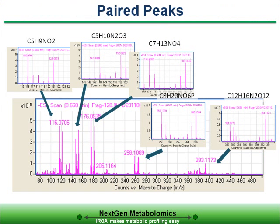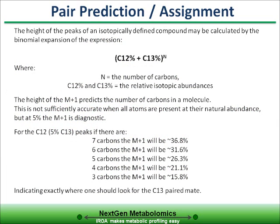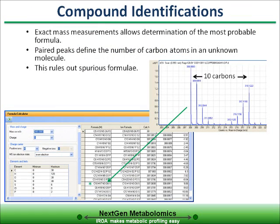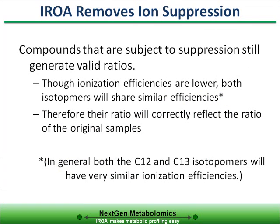This is what the AROA peaks look like. They have a characteristic U shape, very much like a smile. Shown here, the number of carbons in a molecule can be calculated from either the M+1 or the M-1. Artifacts can no longer be mistaken for biological compounds. Using the AROA technology, compounds are correctly identified.